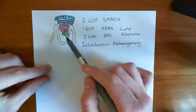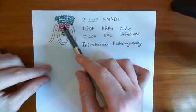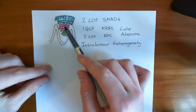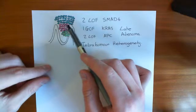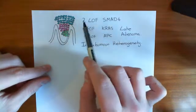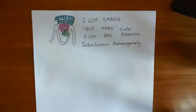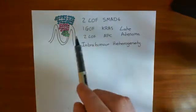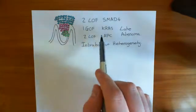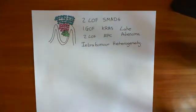At that stage it's known as an intermediate adenoma. The next stage is for one of these pink cells — which has two loss-of-function mutations in APC and one gain-of-function mutation in KRAS — to get two loss-of-function mutations in SMAD4. That leads to it growing and dividing even more rapidly still, producing a population of cells with two loss-of-function mutations in APC, one gain-of-function mutation in KRAS, and loss of function in both SMAD4 genes.